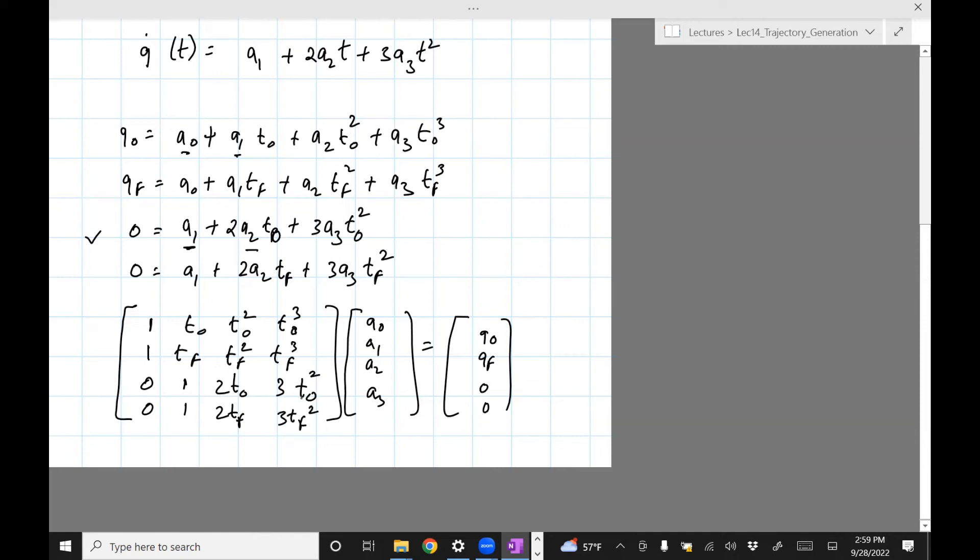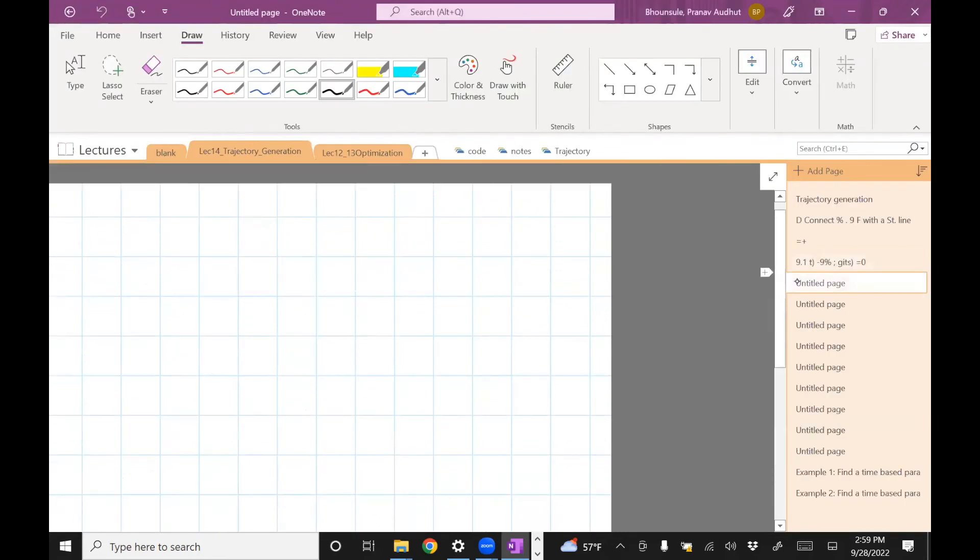Now it becomes a little harder to do that by hand because it's a four by four matrix. So this is where I think you will benefit if you use symbolic package or something in the hand. So I will not write the solution. I have it in the code, which I'll show you in a bit. But what you get from this is the following.